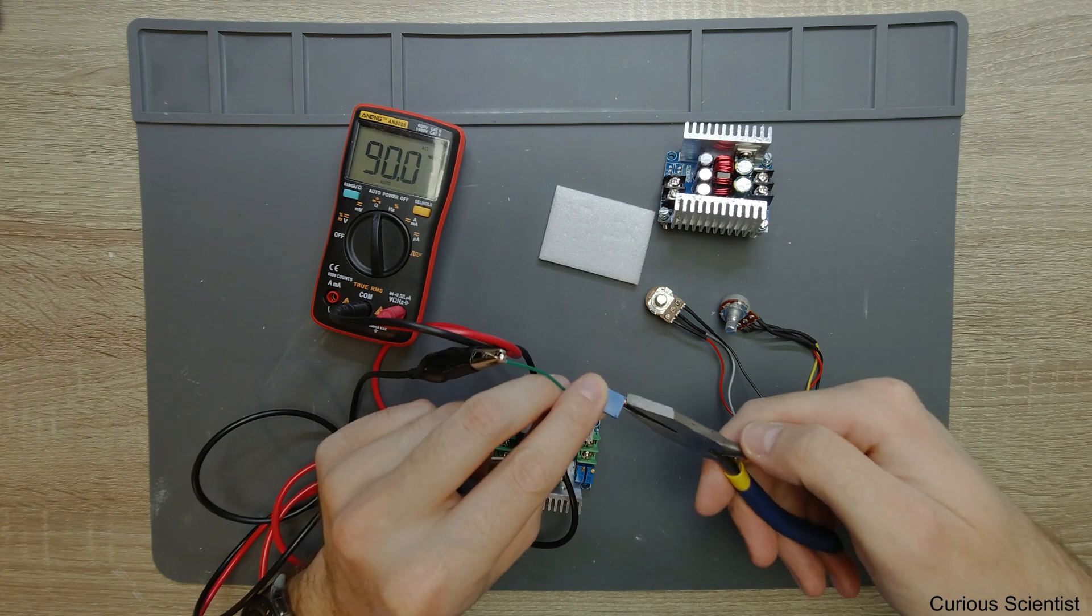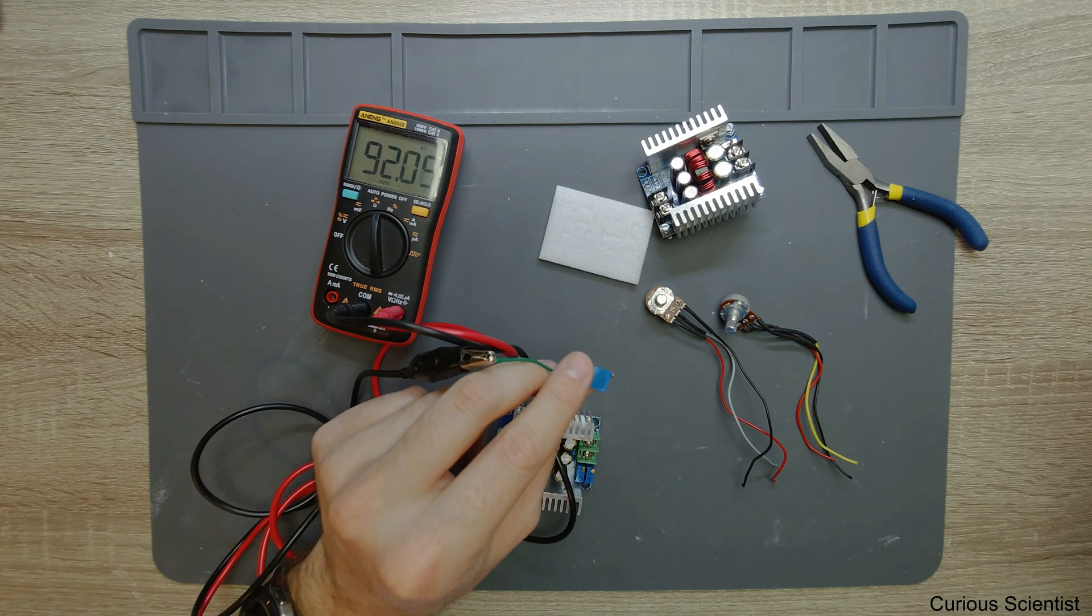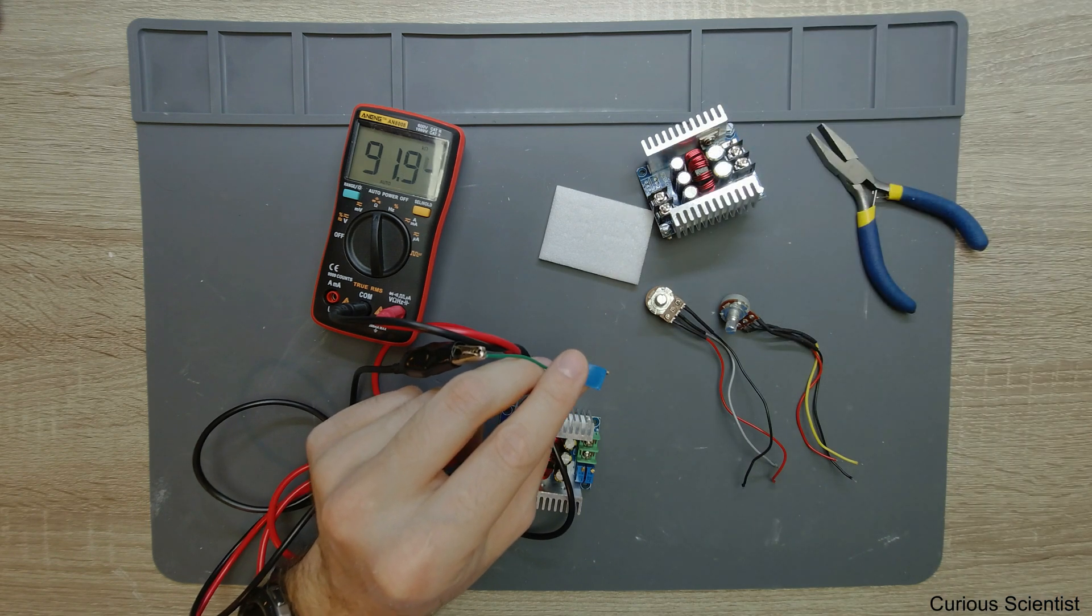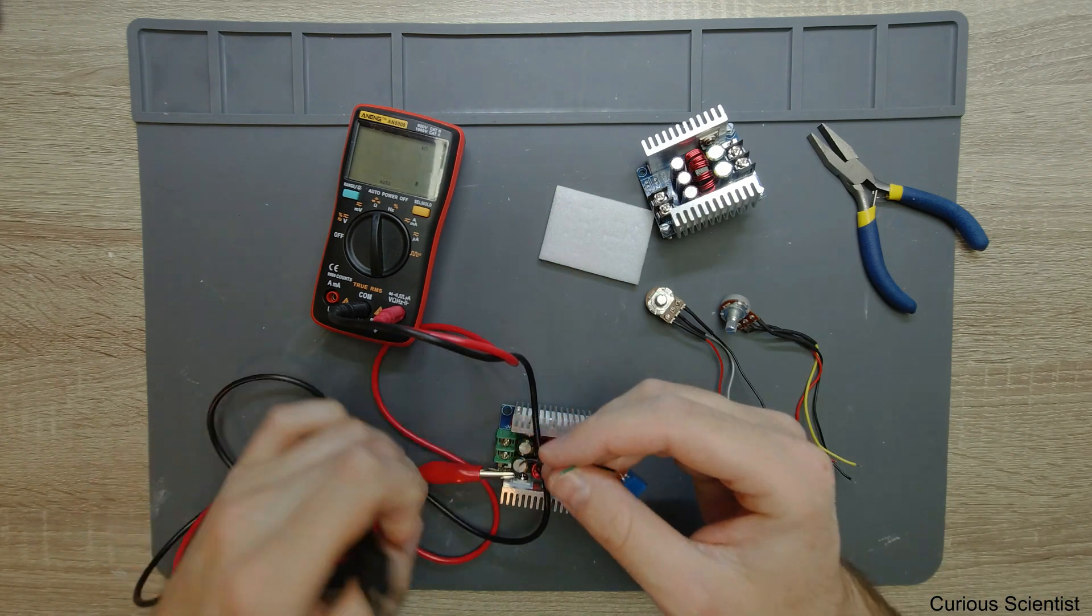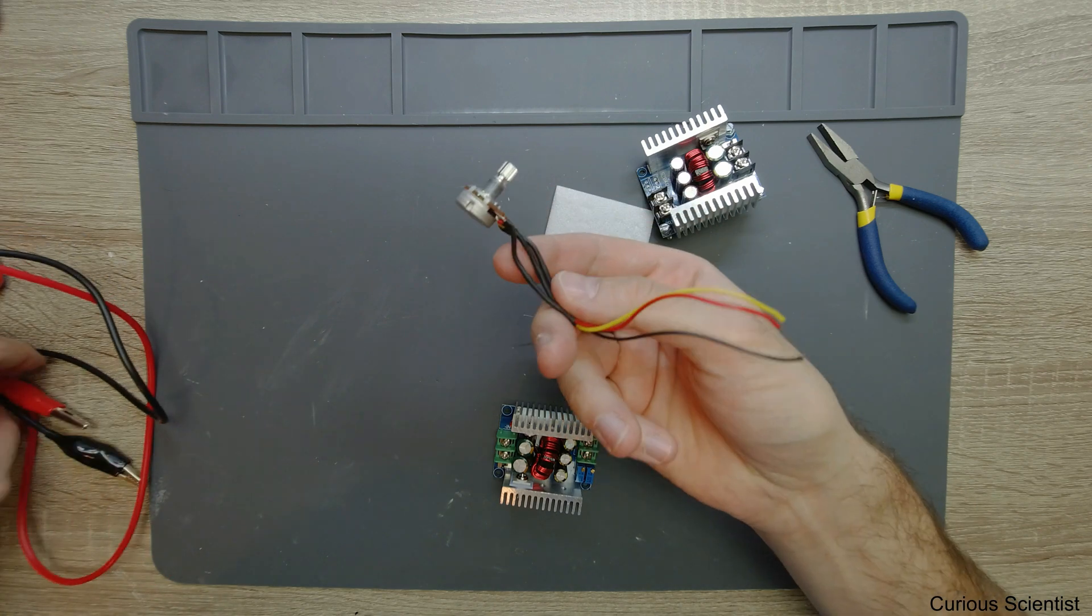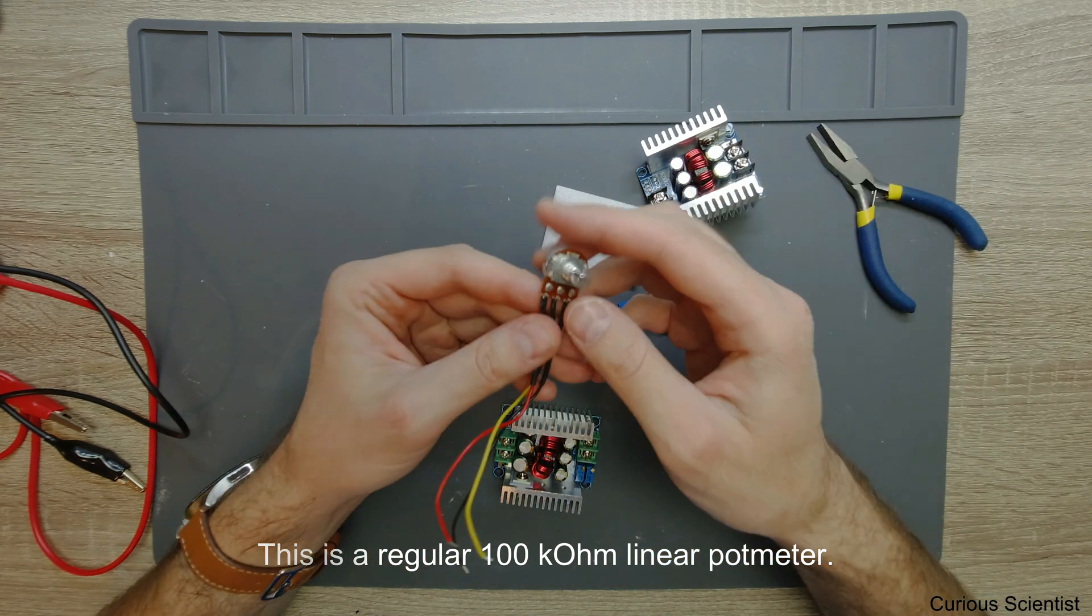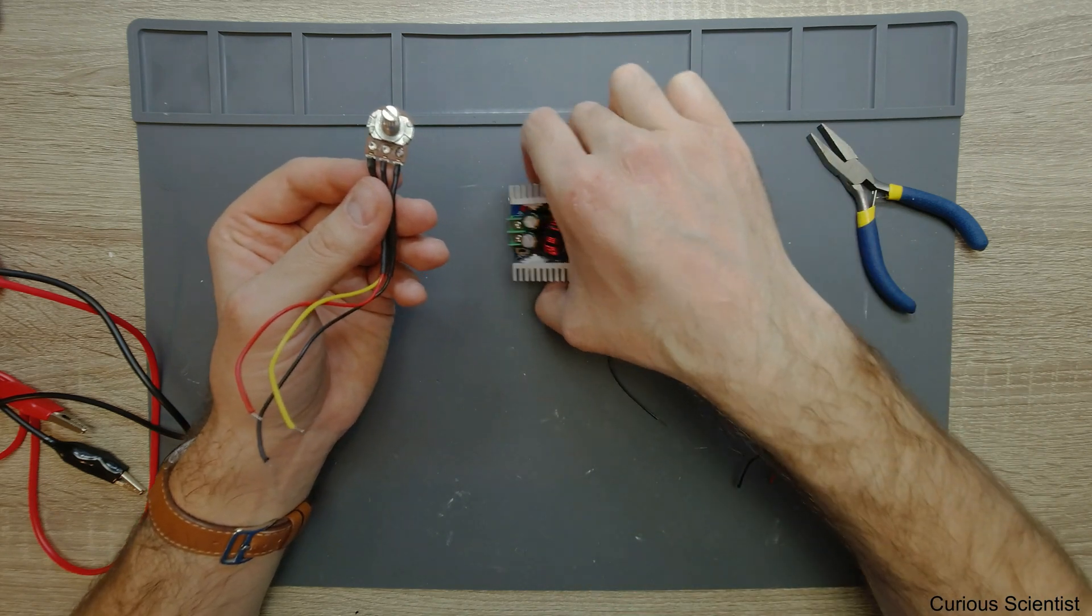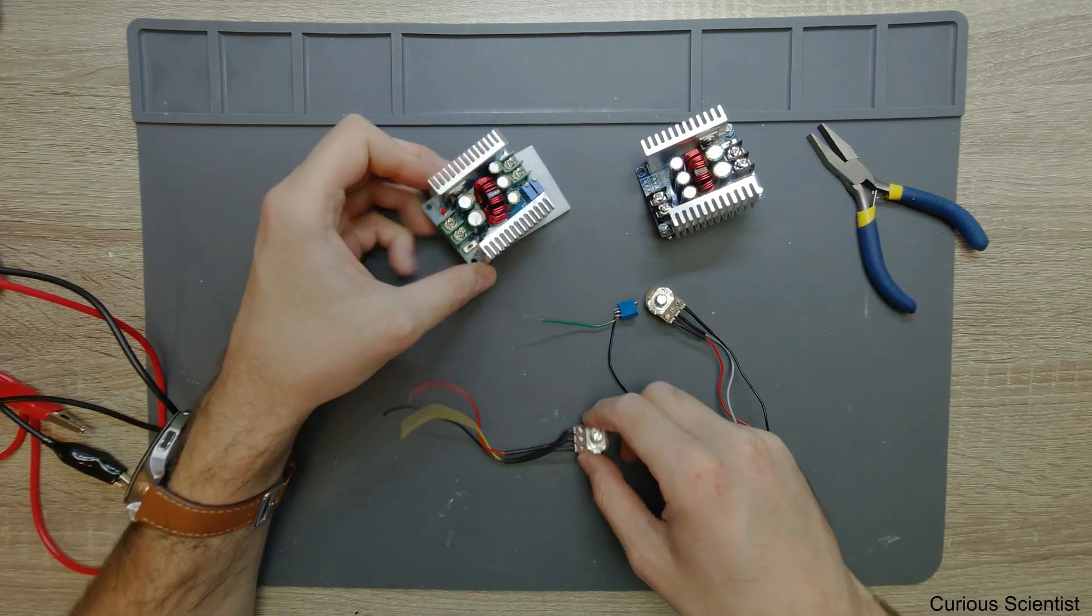The problem with this trimmer is that it's very precise because there are many turns in it, but it's a pain. It's also not so safe to have a metal screwdriver and poke around this live circuit to try to change your output. What you can do is get another type of potentiometer. You can have this wiper type of potentiometer as well. This is a very cheap and easy to use potentiometer.